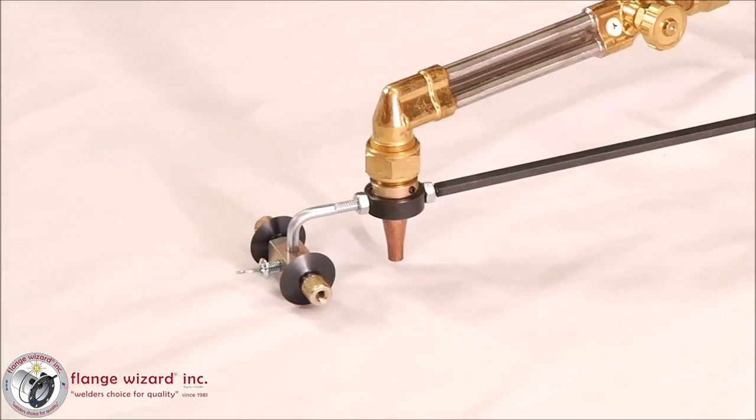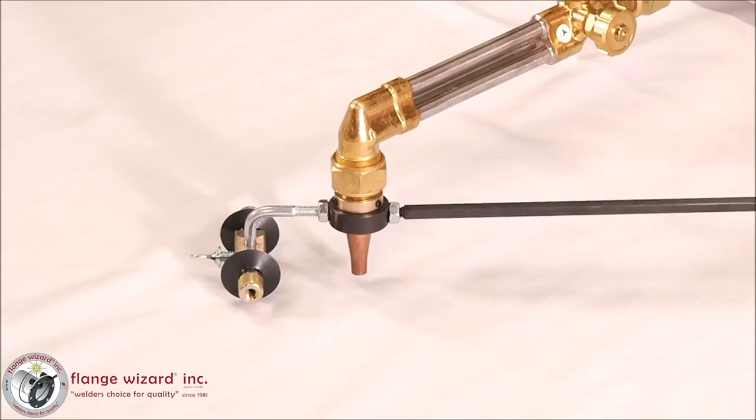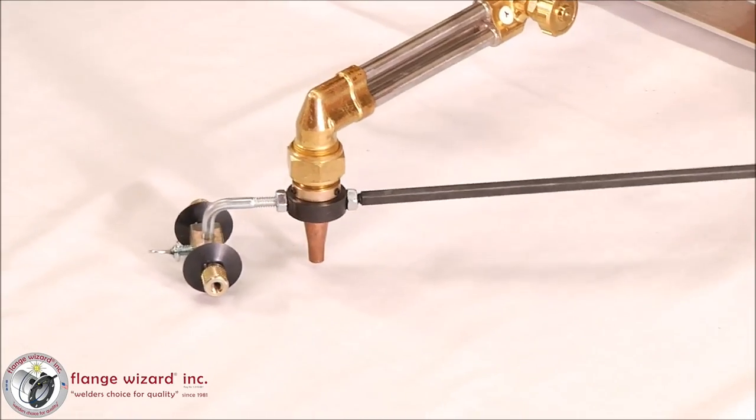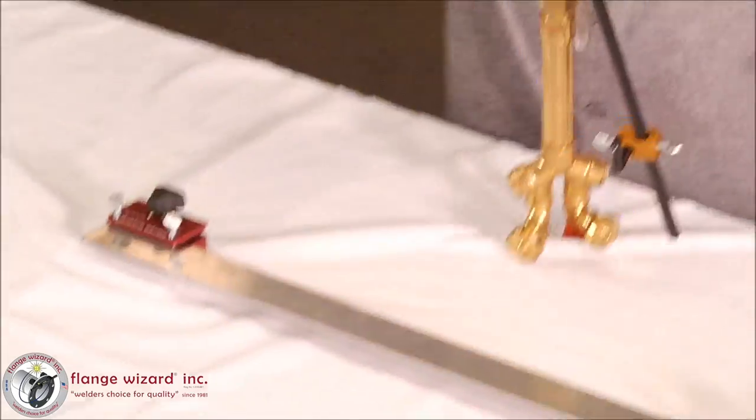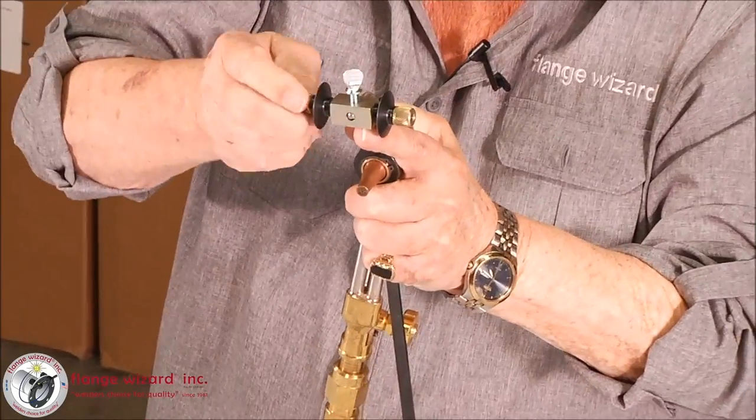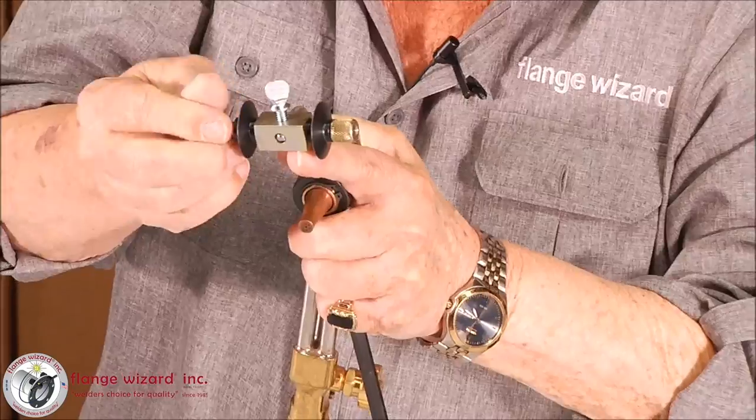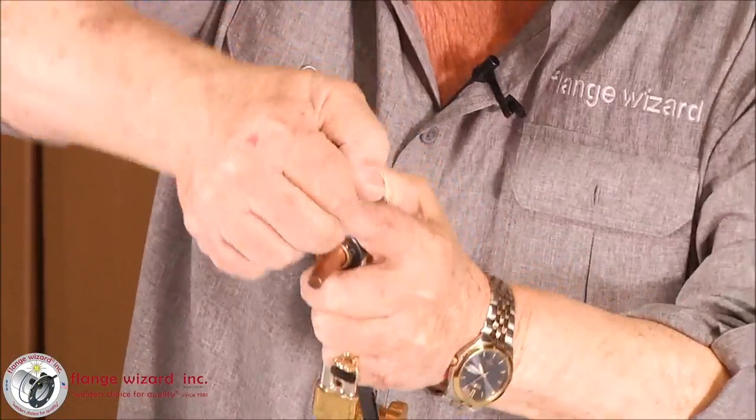It's good for straight cuts. You have a lot of control here if you have an irregular shape to cut or a radius. When you're wanting to cut holes, you screw off one axle and turn this 90 degrees.